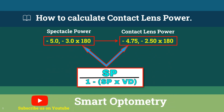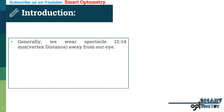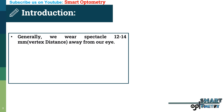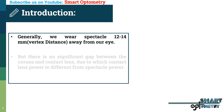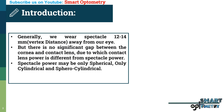Today I will discuss how to calculate contact lens power. Generally we wear spectacles 12-14mm away from our eyes, but there is no significant gap between the cornea and contact lens, due to which contact lens power is different from spectacle power.